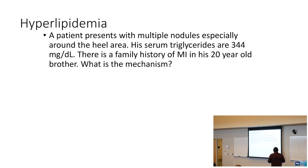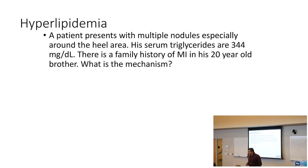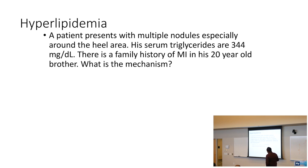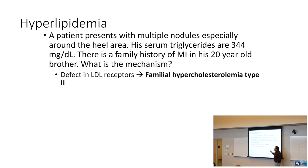Moving on — a patient presents with multiple nodules, especially around the heel area. His serum triglycerides are 344. There is a family history of MI in a 20-year-old brother — that's pretty young. This is going to be familial hypercholesterolemia. Familial hypercholesterolemia type 2 is a defect in LDL receptors, which is going to cause premature atherosclerosis, high triglyceride concentrations, and an early history of MI, especially in a family member.